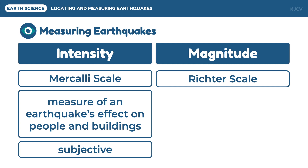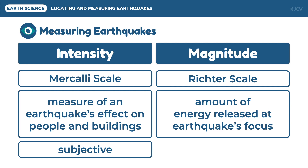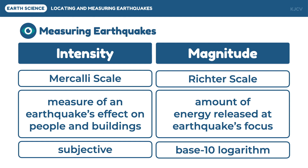On the other hand, magnitude is the measure of the energy released at the earthquake's focus. Two locations experiencing the same earthquake will have the same magnitude, because magnitude is measured at the earthquake's focus and not per location. Unlike intensity, magnitude is objective and uses a base-10 logarithm. This means that an earthquake with a magnitude one level higher is 10 times stronger. Therefore, a magnitude 8 earthquake is not twice as strong as magnitude 4 — since it is 4 levels higher, it is 10,000 times stronger.